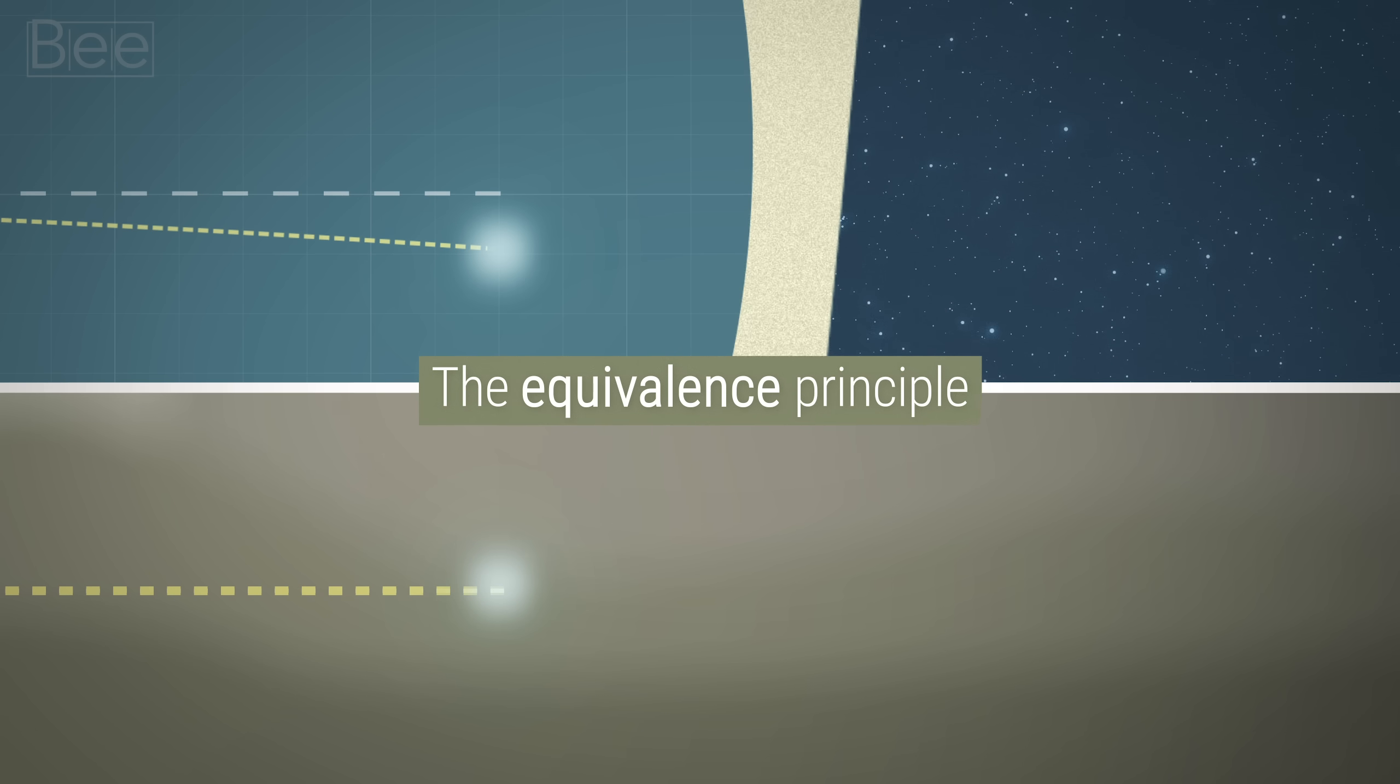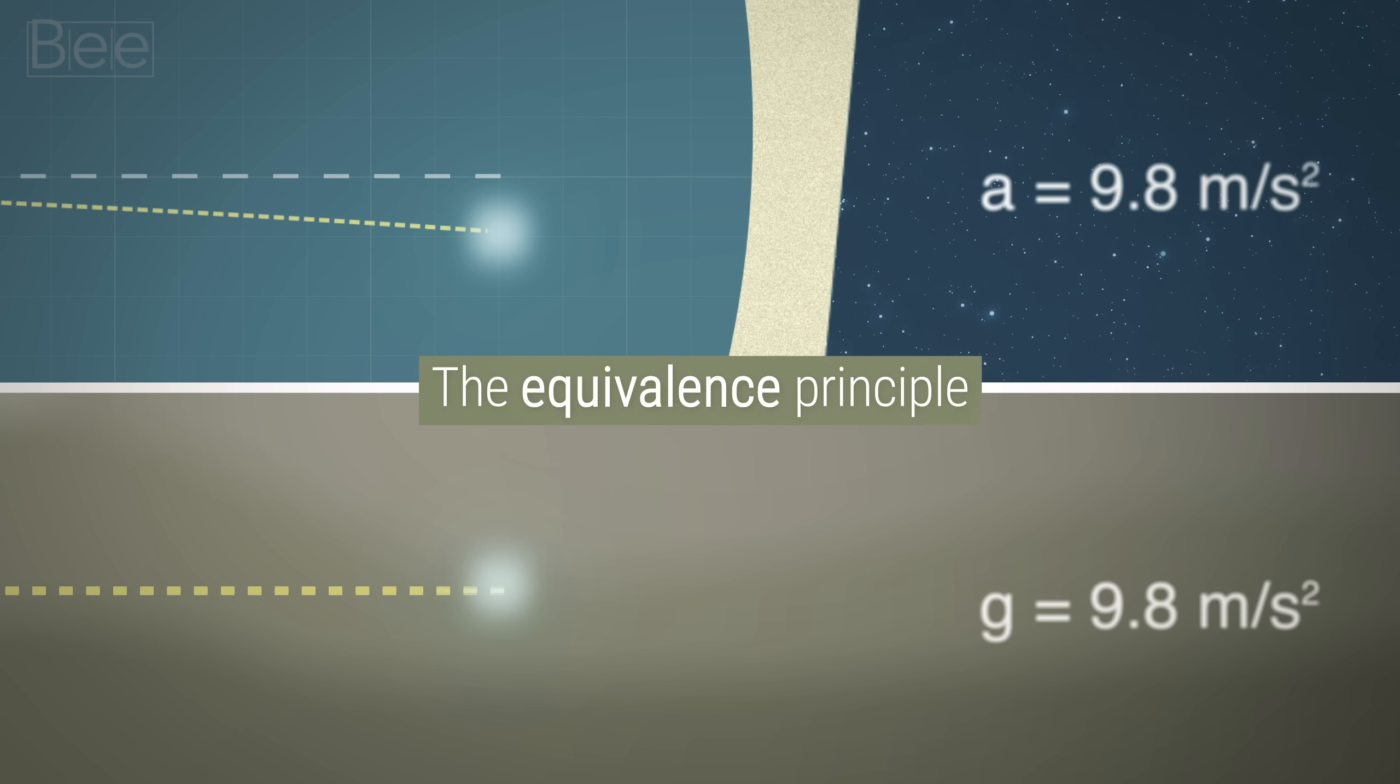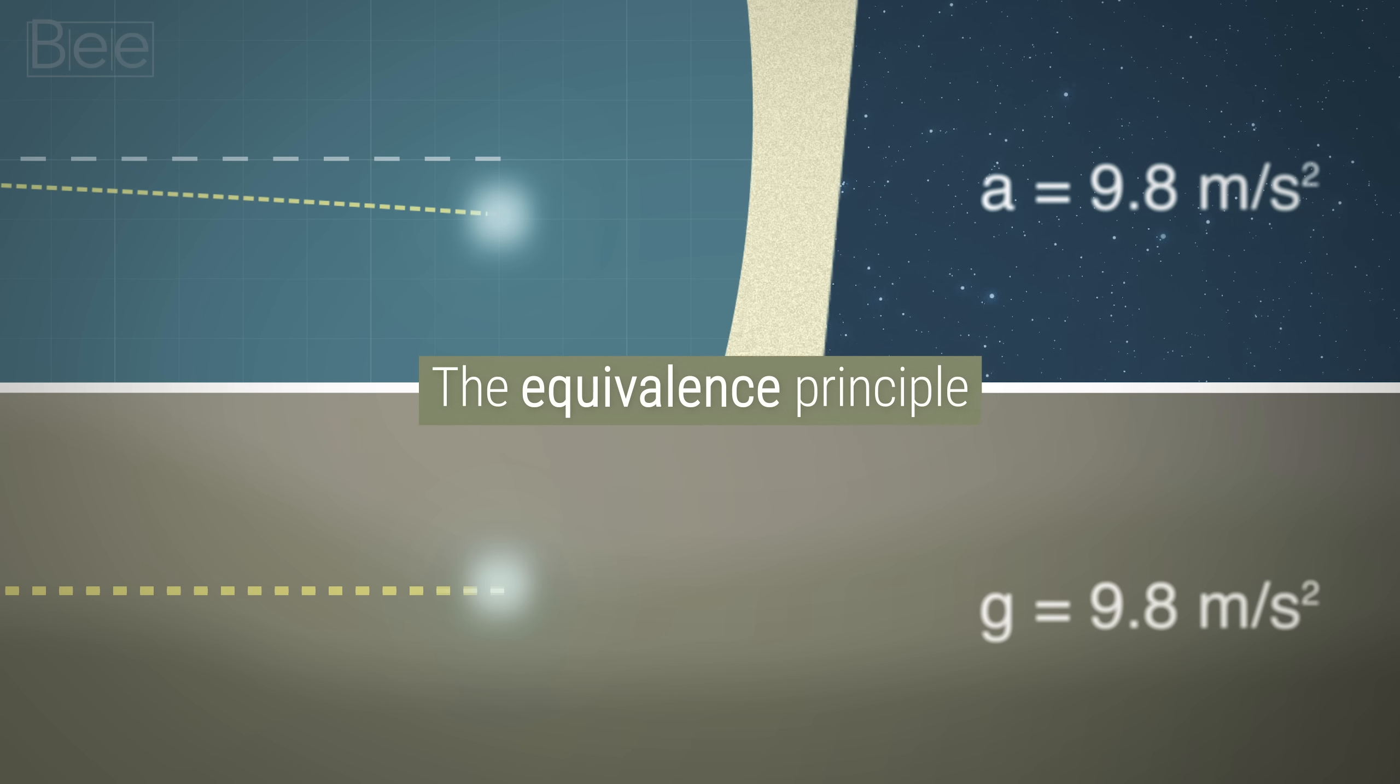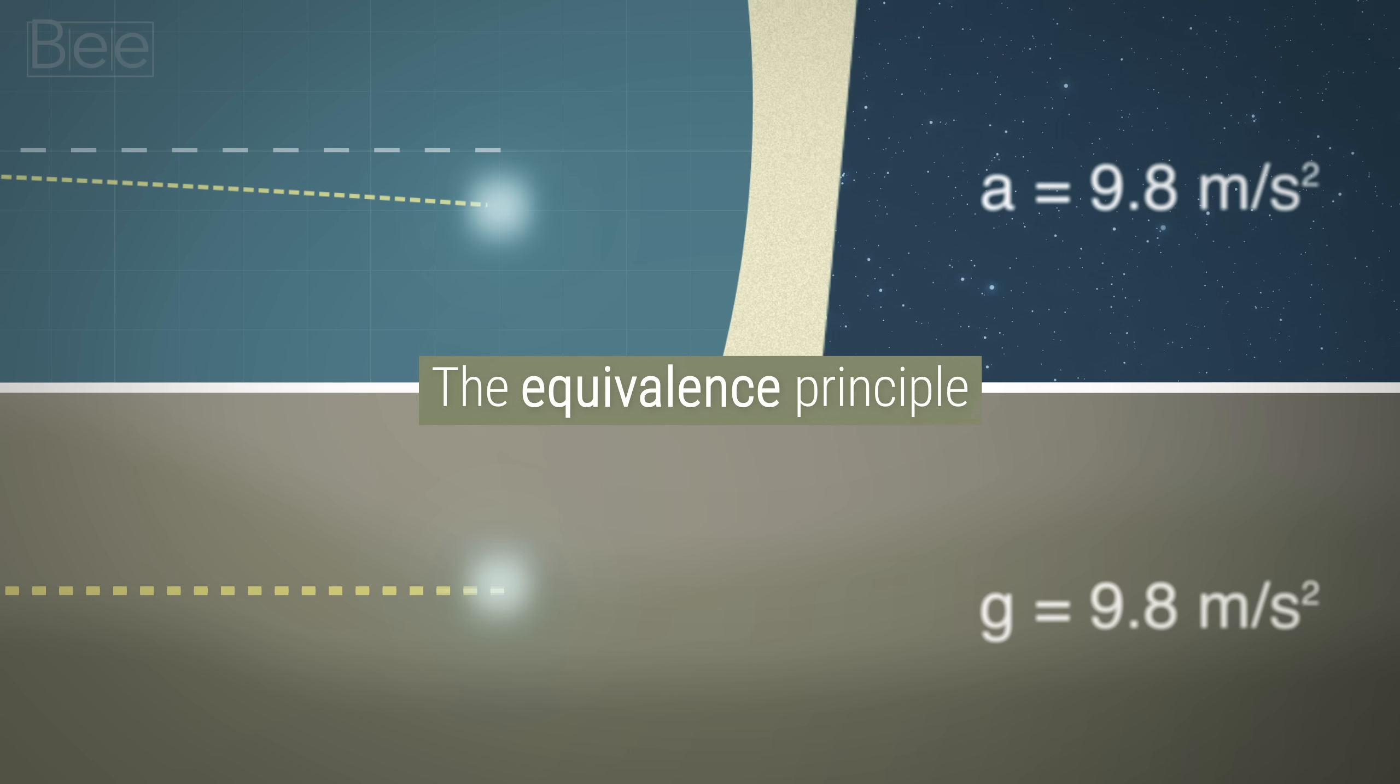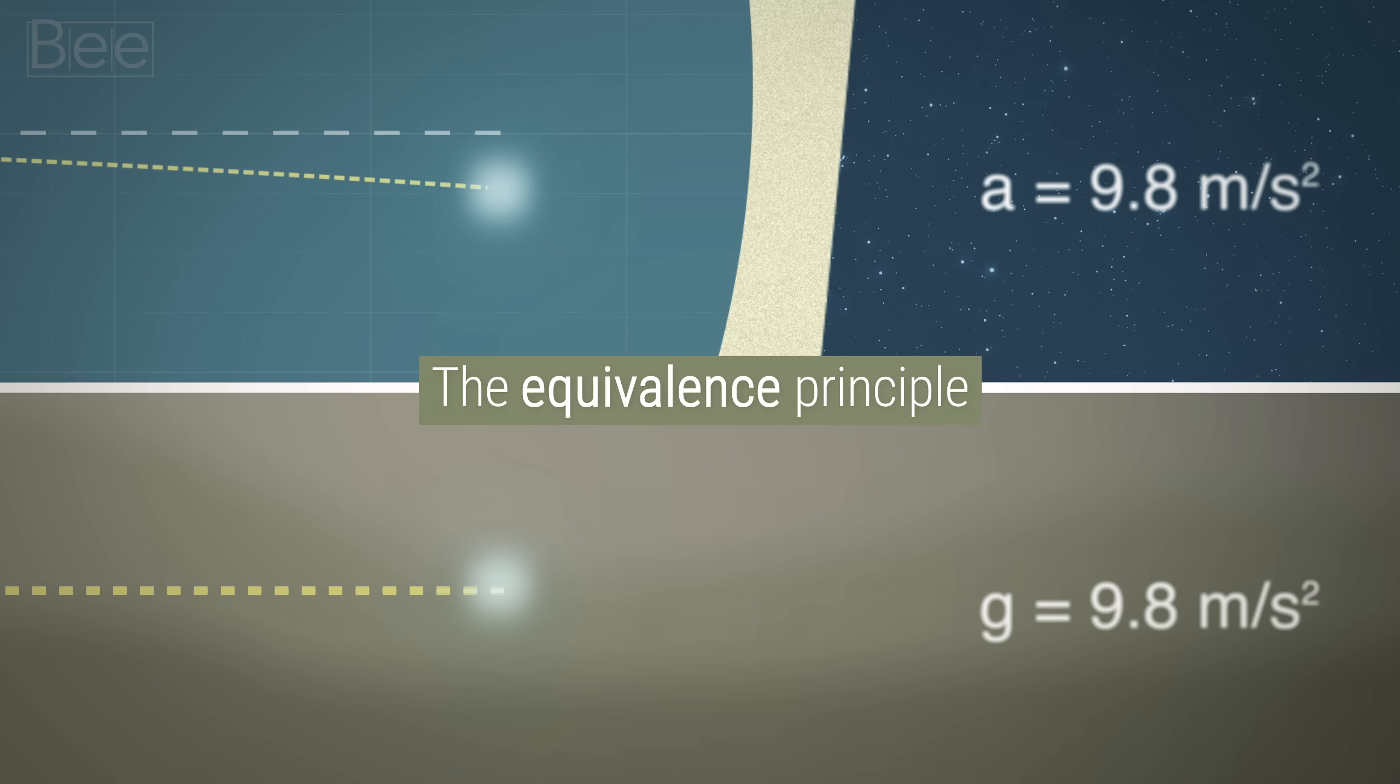Back to the topic. Einstein wasn't convinced though, as this violated the principle of equivalence. The acceleration of the room on the spaceship was the same as under the influence of gravity. The heights should be the same in both cases. He realized that the only possibility could be that the light beam must be bending under the influence of gravity.